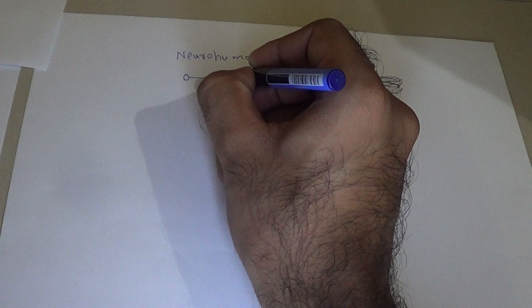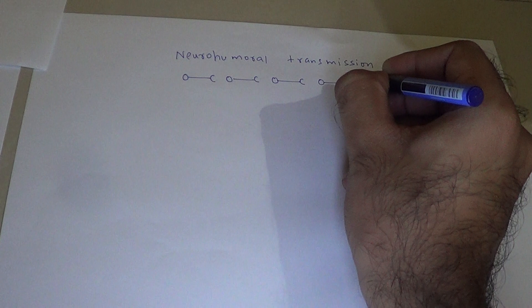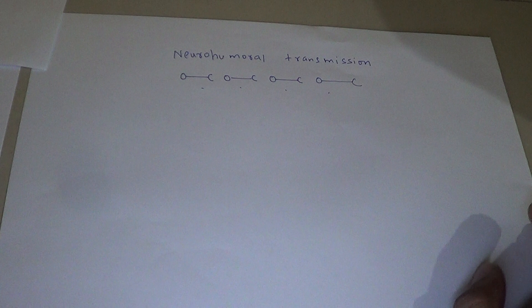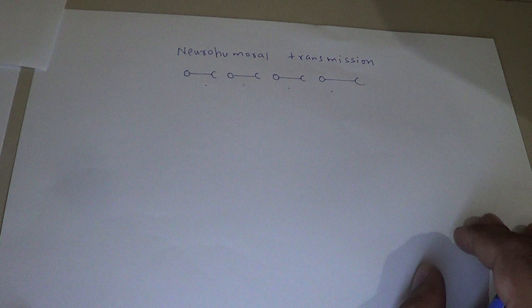Now, what is neurohumoral transmission? Neurohumoral transmission is basically the communication that takes place between neurons. So suppose we have a set of neurons communicating with each other — the communication that takes place between these neurons happens through a process known as neurohumoral transmission.